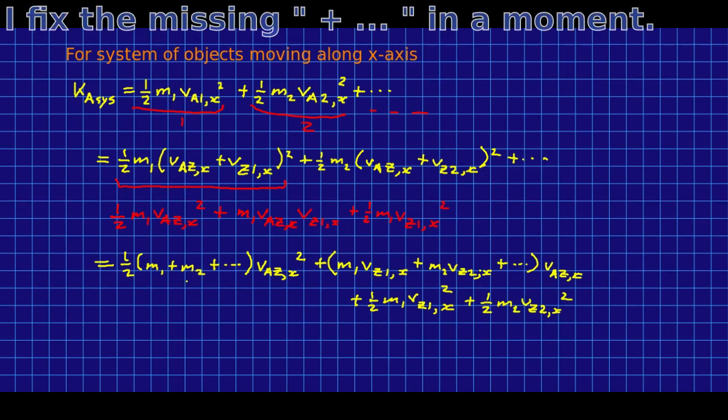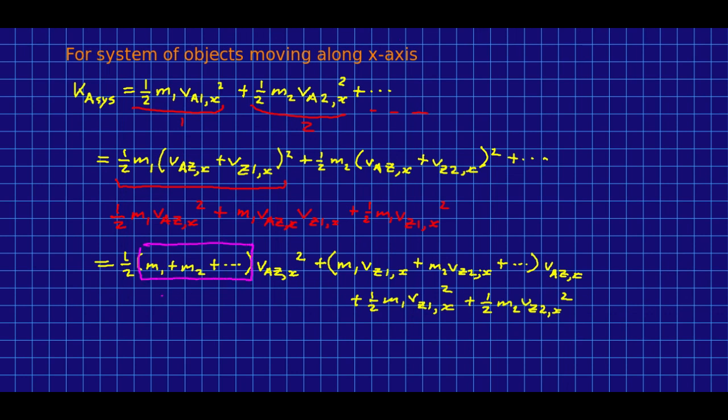So, notice a few things. This is just the total inertia of the system. This is just the sum of the kinetic energies of all the objects in the system in the zero momentum frame.